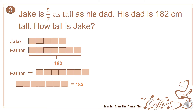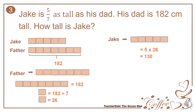I want to find the value of each part. Therefore, I'll divide 182 by 7. Each part is now equal to 26. But I would like to get the height of Jake. Since Jake has 5 parts and each part is equal to 26 centimeters, 5 times 26 is equal to 130. Jake is 130 centimeters tall.